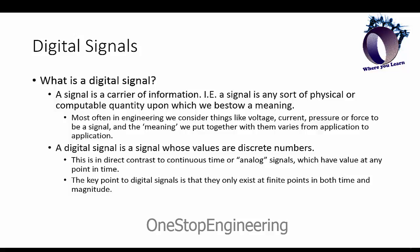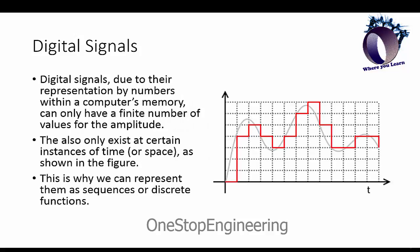Digital signals need to be represented in a computer's memory, and because of this we only have a finite number of choices that we can assign to the amplitude of the signal, which is why digital signal values are quantized. They also only exist in certain instances of time or space, as I have shown in the figure, and due to these two factors we can represent a digital signal as a sequence of numbers or as a discrete function that generates a sequence of numbers.